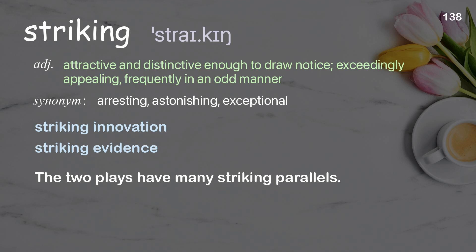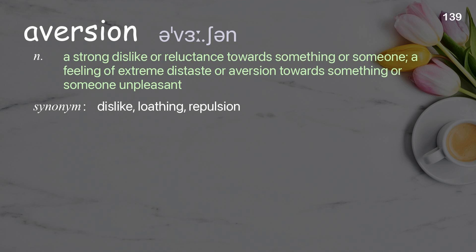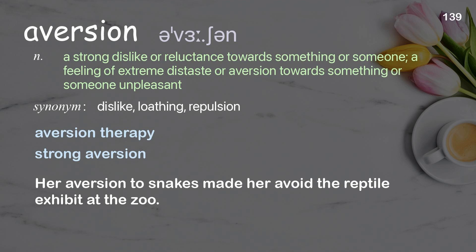Aversion: a strong dislike or reluctance towards something or someone; a feeling of extreme distaste towards something unpleasant. Examples: aversion therapy, strong aversion. Her aversion to snakes made her avoid the reptile exhibit at the zoo.